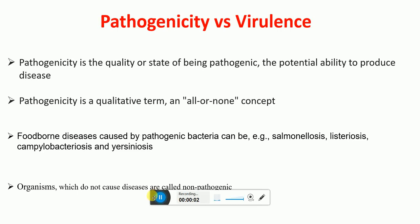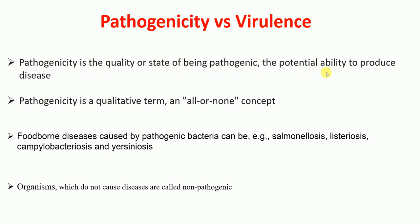In this video I'm going to talk about the differences between pathogenicity and virulence. Pathogenicity is the quality or state of being pathogenic — the potential ability to produce disease. Organisms, for example bacteria and viruses, can be either pathogenic or non-pathogenic, which means pathogenicity is an all-or-none concept.